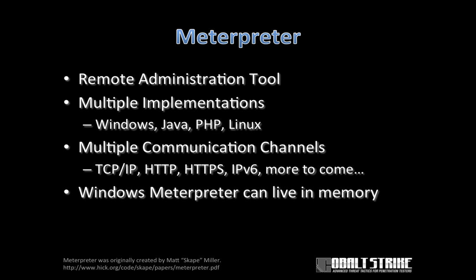What's cool about Meterpreter is it can communicate through multiple channels. It can connect back to you, the attacker, making a TCP connection. It can communicate over HTTP or HTTPS. Meterpreter can also speak IPv6. Depending on how you got it onto the system, possibly with a memory corruption exploit, Windows Meterpreter can live entirely in memory. It can also migrate to different processes.